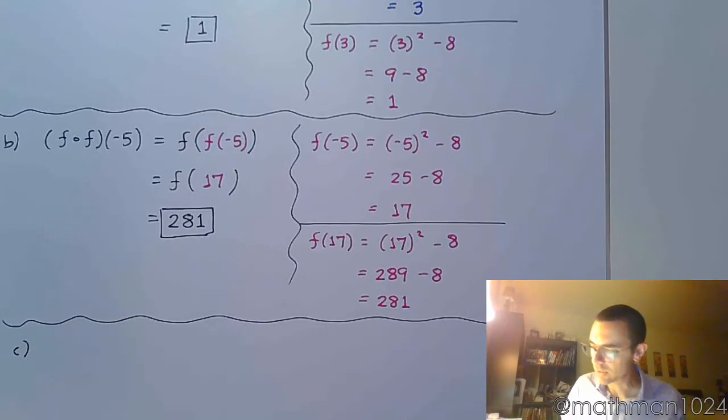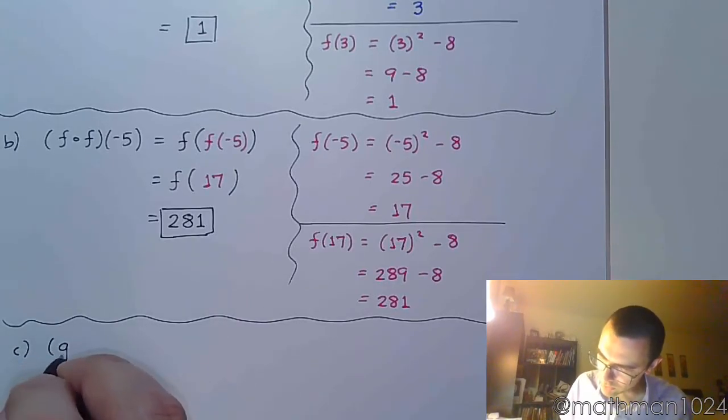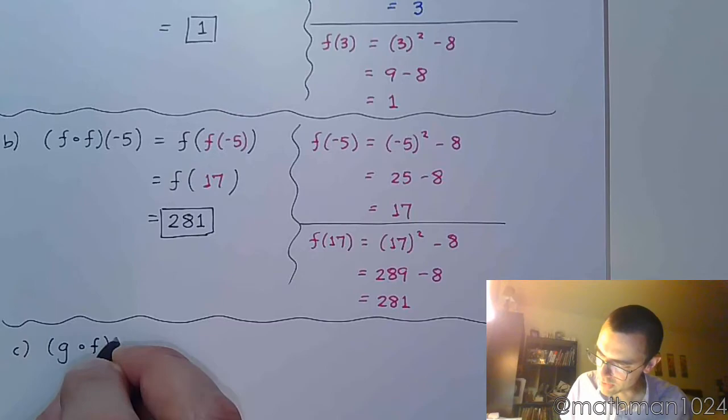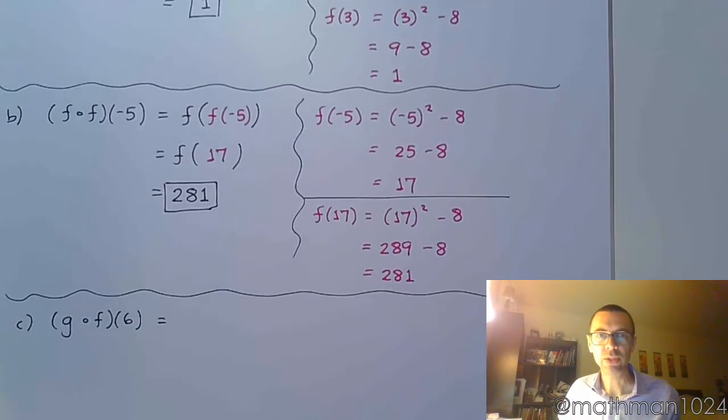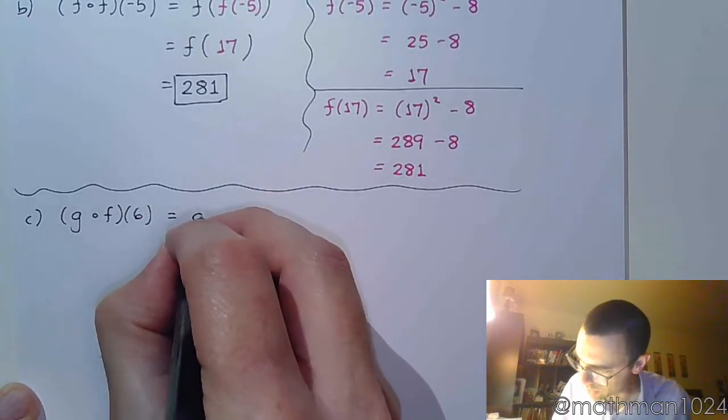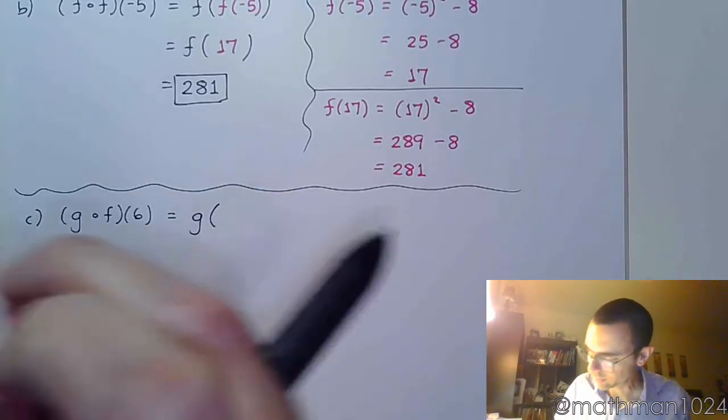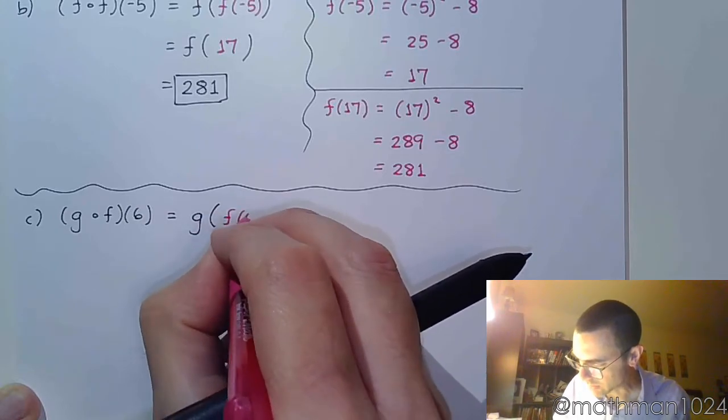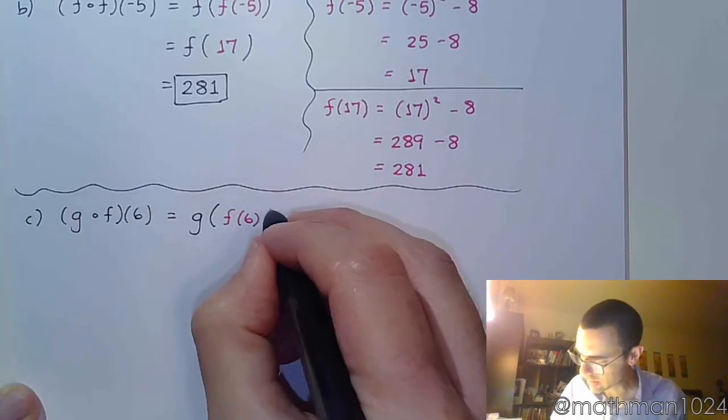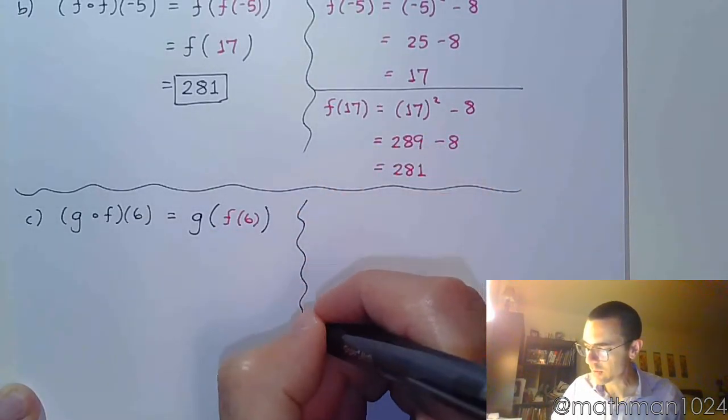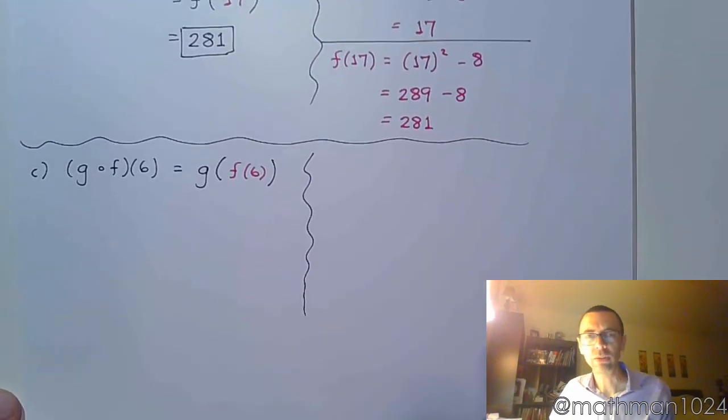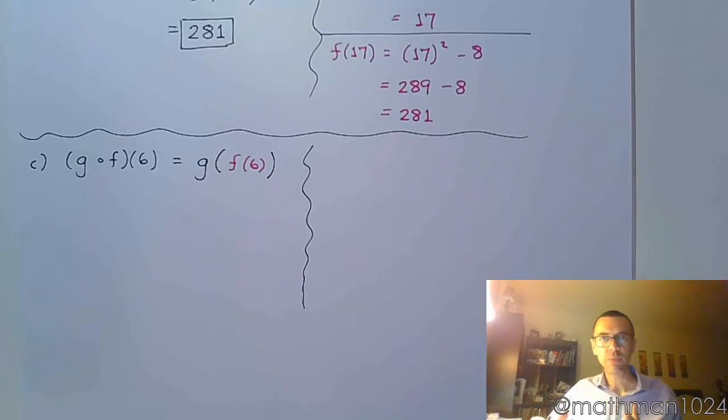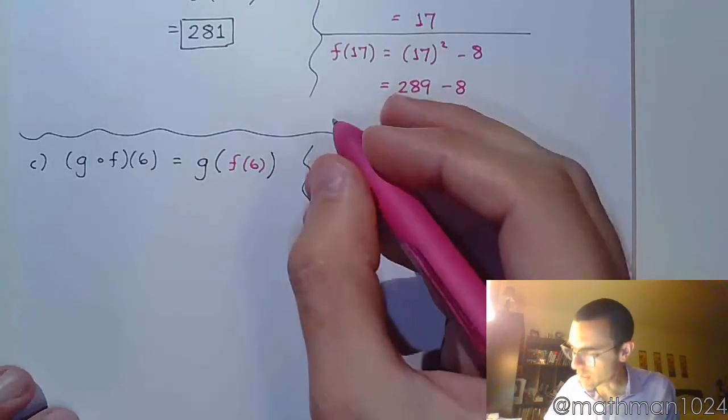So let's do this last one here. We have g of f of 6. All right, so let's see, what does that mean? Well, that means to do g of f of 6. And once we figure out f of 6, then we can evaluate g. And a lot of your homework problems are going to look like this. You plug it into one piece, you take that answer, you plug it into the other one. So that's why we're running through all these different examples.